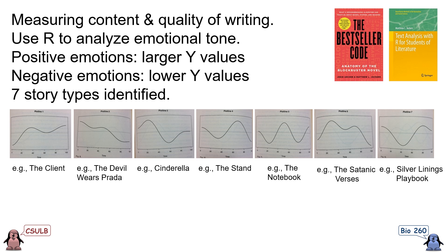For example, the first one on the left is The Client. You can see it starts off very negative, things get better for a while, and then there's some sort of crisis and things get worse, then things get better, and the book ends on a happy note. Contrast that with a book like The Devil Wears Prada, where things start off fairly good and then generally decline over time, ending very unhappily. As they looked across a whole bunch of books, they discovered basically these seven story types. Because they're trying to figure out what might make money and what might make the best stories, they went back and looked at how the sales of different books did according to these figures.